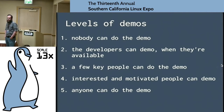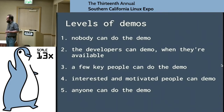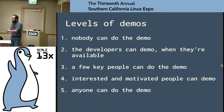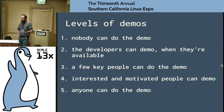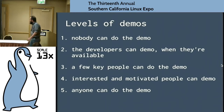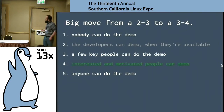I think there are five levels of demos — five levels of software quality. This is kind of like what Rusty Russell came up with for APIs. Level one: nobody can do the demo. This is pretty often — software that's in development. Level two: the developers can demo when they're available. Level three: a few key people can do it. Level four: any interested and motivated people can do the demo. Level five: anyone can do it. Five is what a lot of software-as-a-service sites have with online product tours. What I'd really like to do is move my demos from at least level two up to level four.